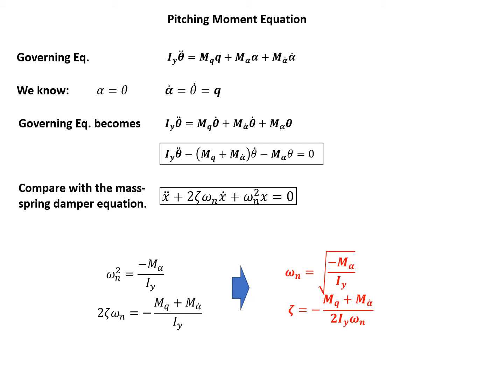And also how to get omega n and natural frequency and the damping coefficient. So this is just by one-to-one comparison with the second order ODE from the mass spring damper system. So you should remember the way, how we do the derivation.